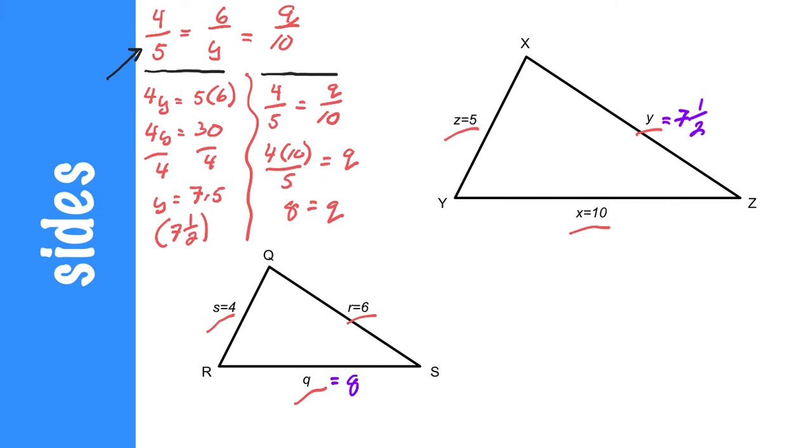All of these ratios, if I rewrite them: 4 over 5 equals Y, which is 7.5, equals Q, which is 8 over 10. If you divide each of those numbers, each and every time you will get 0.8. So the ratios of the corresponding sides are all the same, and that is the second rule of similar triangles.